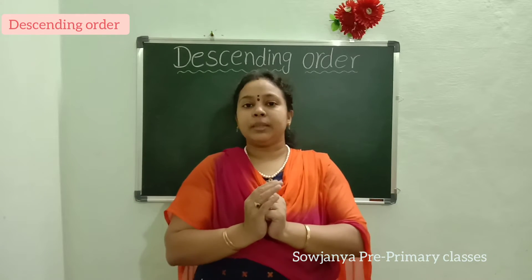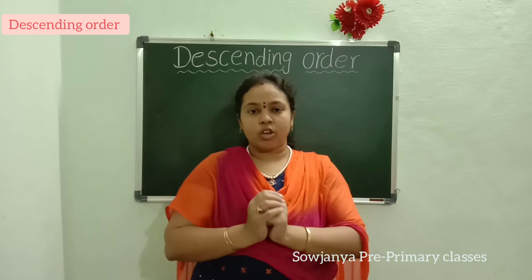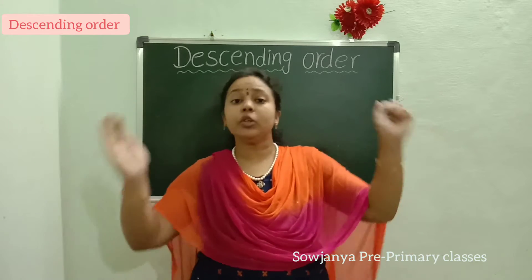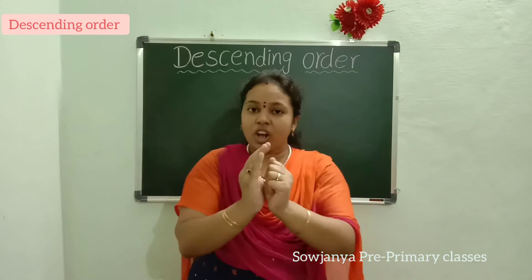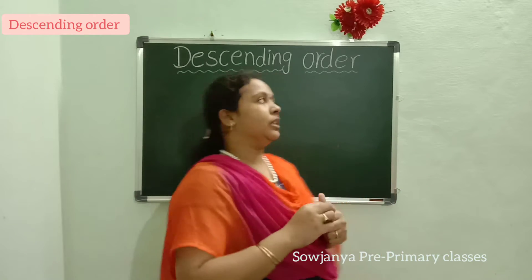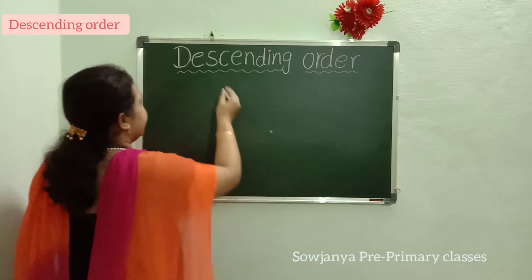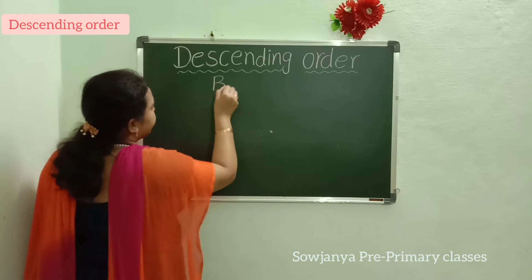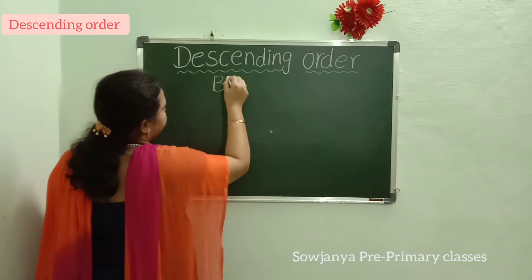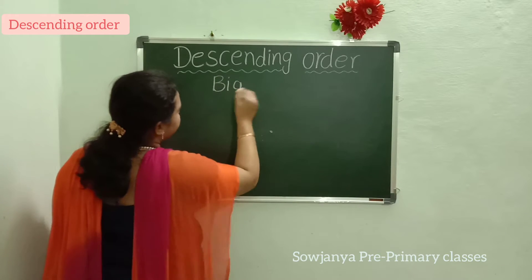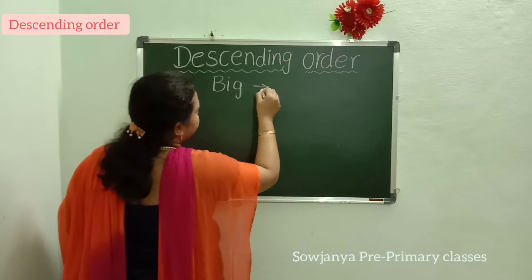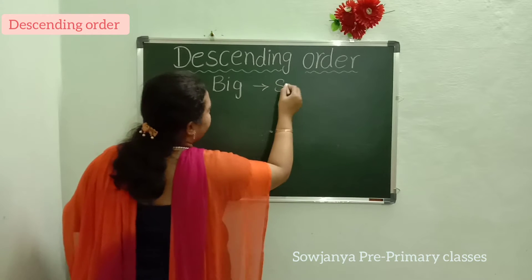What is the meaning of Descending Order? Big Number to Small Number.